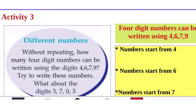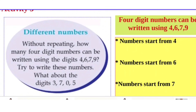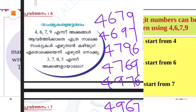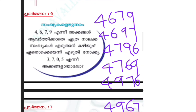Activity 3: Without repeating digits, how many 4-digit numbers can be written using the digits 4, 6, 7, and 9? Numbers starting with 4: 4679, 4697, 4796, 4769, 4976, 4967.